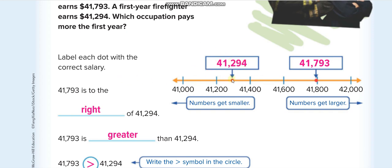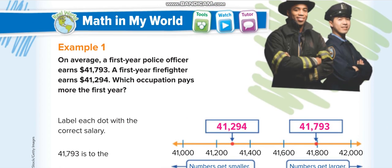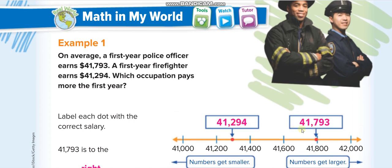Our first number, forty-one thousand two hundred and ninety-four, falls between two hundred and four hundred on the number line. The second number, forty-one thousand seven hundred and ninety-three, falls between six hundred and eight hundred, closer to eight hundred — that's why they placed the marker there.